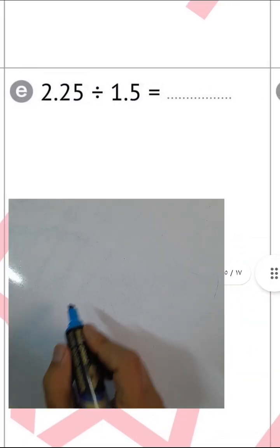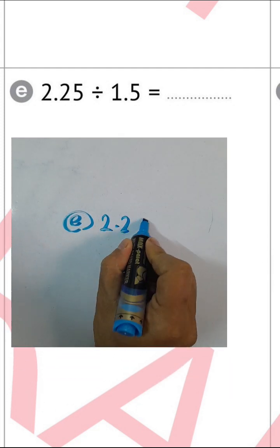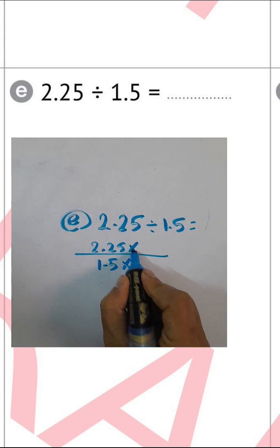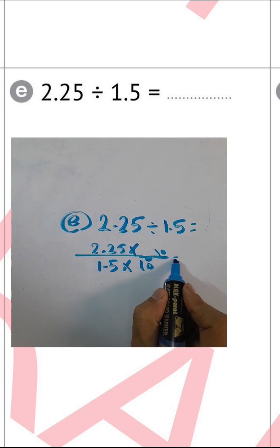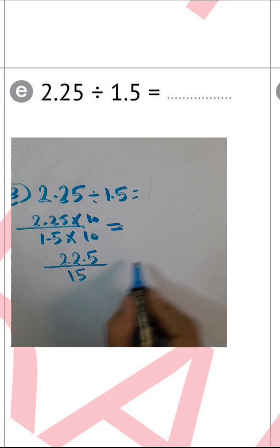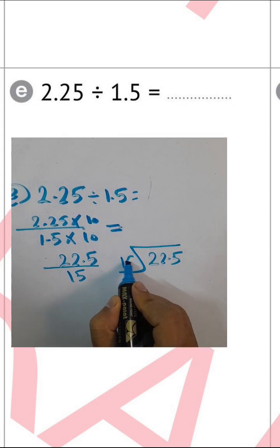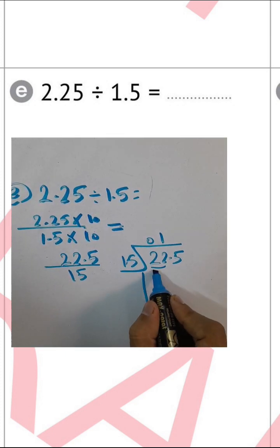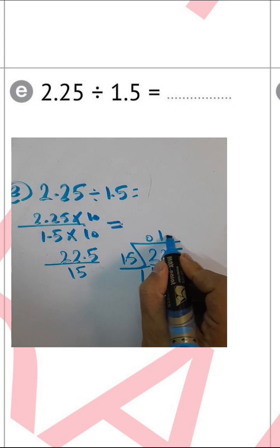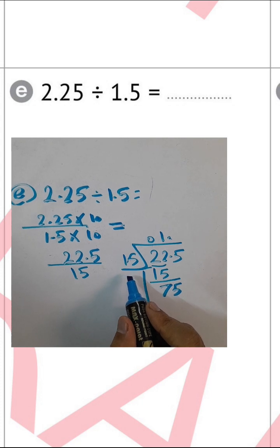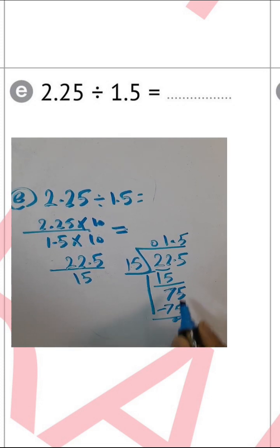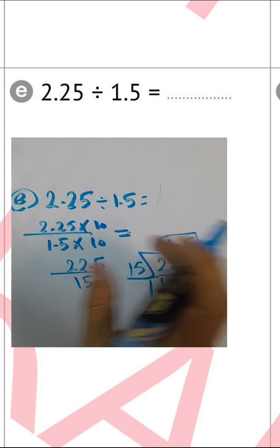Letter (e): 2.25 divided by 1.5. Multiply both by 10 to clear the decimal in the divisor, giving 22.5 divided by 15. 22 divided by 15 equals 1; 1 times 15 equals 15; 22 minus 15 equals 7; put the decimal point; drop down 5: 75 divided by 15 equals 5; 5 times 15 equals 75, remainder 0. The decimal point goes after two places from the left, giving 1.5.